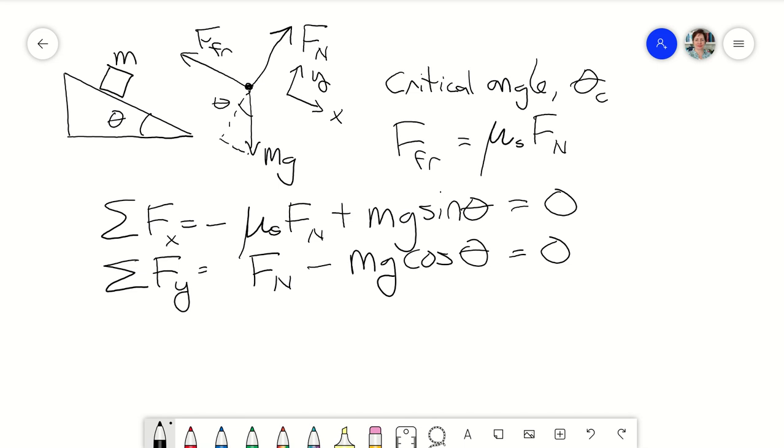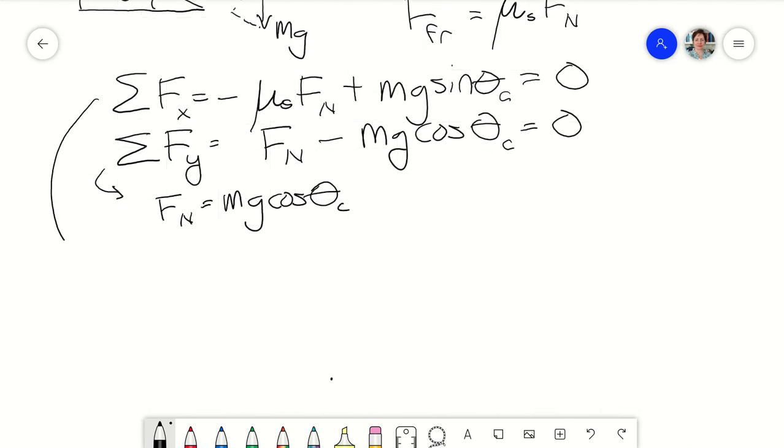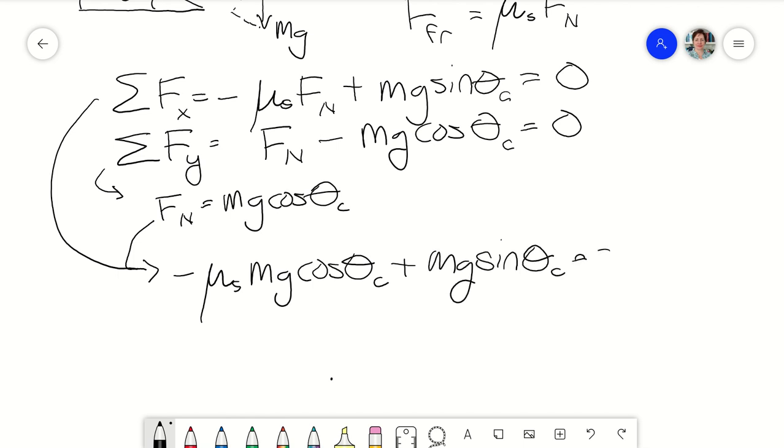Okay, so now we can just find a value for μs in terms of this θ critical. So the thing we don't know and the thing we don't care about is the normal force. So if we use the second equation, the normal force is mg cos θ critical, and we then substitute that into the top equation,